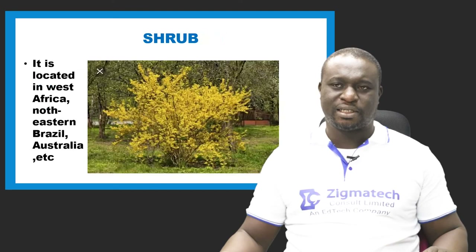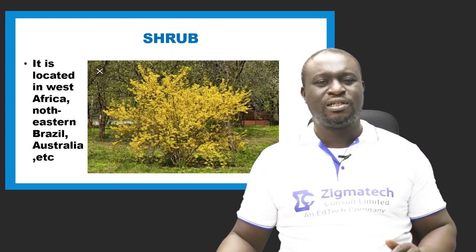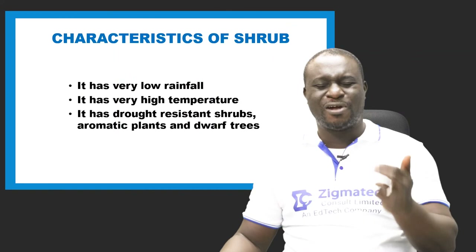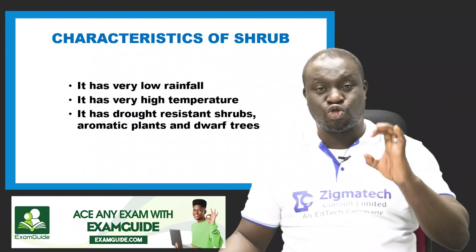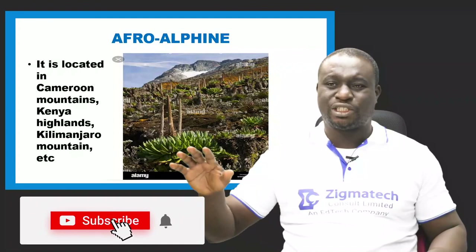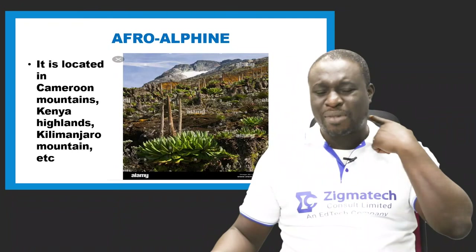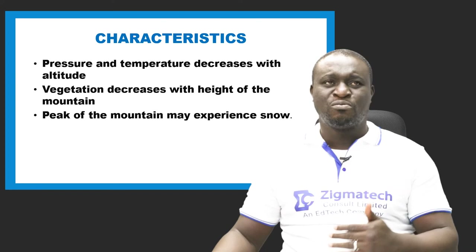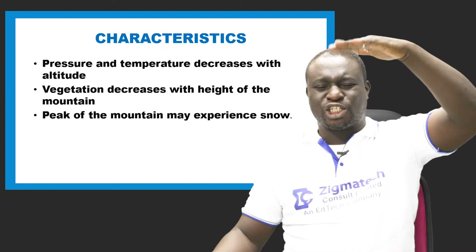Shrubs are found in West Africa, northeastern Brazil, and Australia. They are characterized by very low rainfall, very high temperature, drought-resistant dwarf trees. Afro-alpine biomes are located in the mountains — such as the Cameroon Mountains, Kenya Highlands, and Kilimanjaro. They are characterized by decreasing pressure and temperature with altitude, decreasing vegetation with height, and ice caps at mountain peaks.